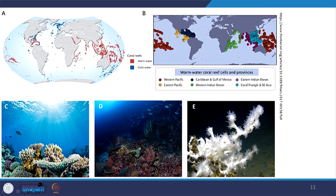Looking at the world distribution of coral reefs on this map, we can see reefs in the Indian Ocean and the Great Barrier Reef in Australia, which extends about 2,000 kilometers. Warm water coral reefs and their provinces are shown, and cold water reefs exist where the water should not be less than 18 degrees Celsius.